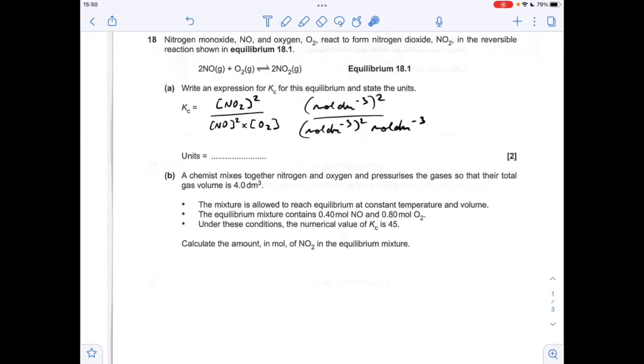To get the units for KC, we just substitute in the units for the terms in the KC expression. You can see these will cancel, so we're going to be left with 1 over moles per decimetre cubed. We just take everything up to the top and flip the sign, which gives dm³ mol⁻¹.